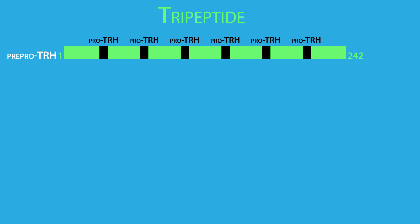TRH is a tripeptide that is synthesized from a 242-amino acid precursor called the pre-pro-TRH. Each pre-pro-TRH yields six TRH tripeptides through a series of enzymatic modifications.